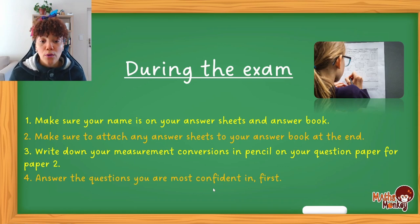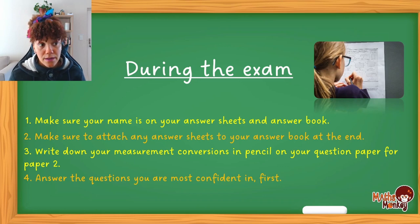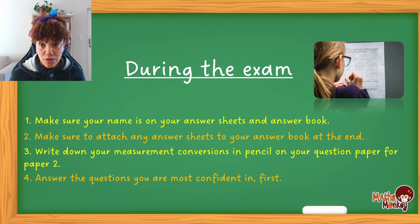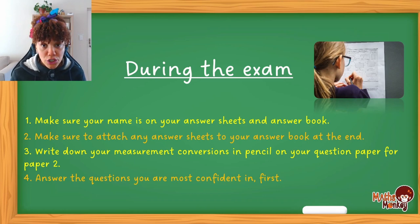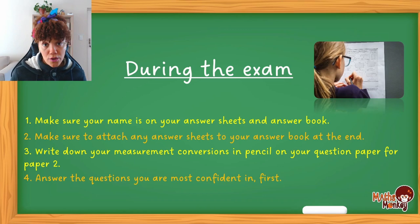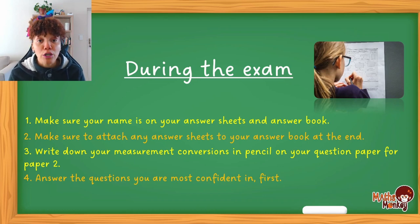Answer the questions you are most confident in first. What happens is if you find a section you really struggle with — a lot of people struggle with measurement — and measurement is the first question in the paper, you take your time struggling, and then the sections you might be confident in you leave for last. Then when the teacher says there's 20 or 15 minutes left, you have to rush the work you actually know and increase your chance of mistakes. Look at the question paper, find the sections you're most confident in, and do those first.